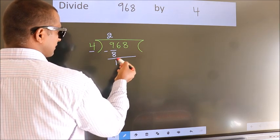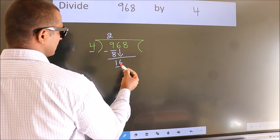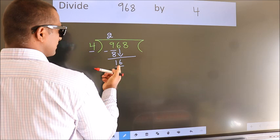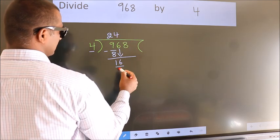After this, bring down the beside number. So, 6 down. So, 16. When do we get 16? In 4 table. 4 fours, 16.